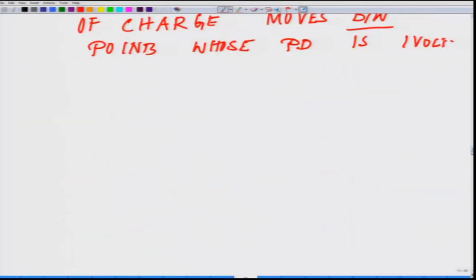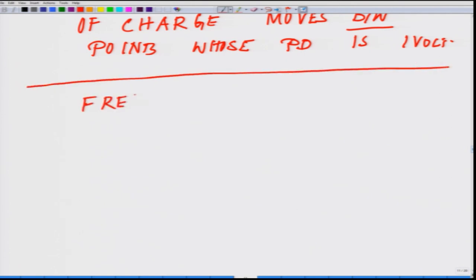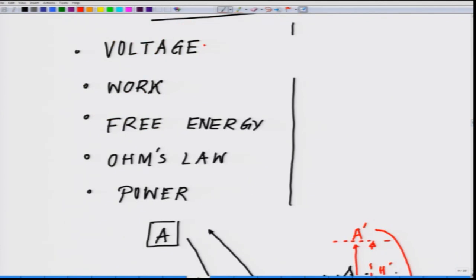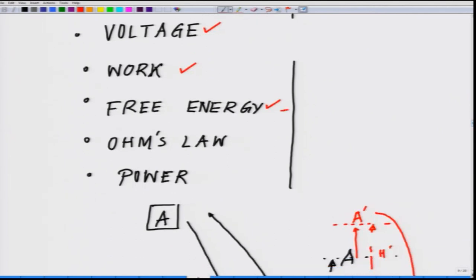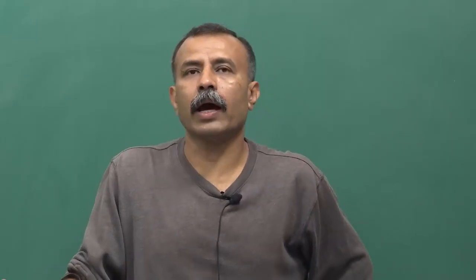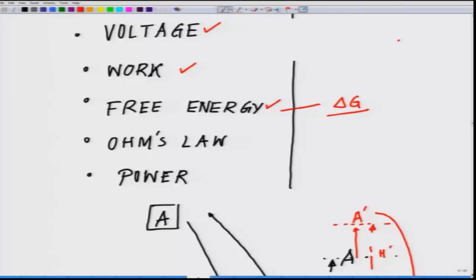Now we will introduce the concept of free energy, represented by delta G. If delta G is negative, it means the work will happen spontaneously — for example, water at a higher height falling to a lower height will fall spontaneously; you do not need to do any work. You drop the water and it falls down.